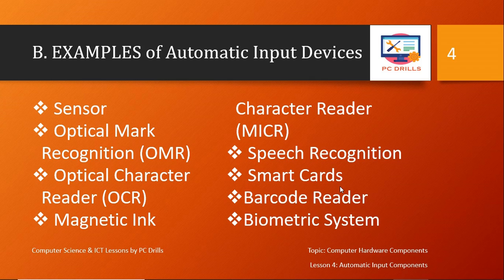The examples we have for automatic input devices or peripherals include: sensor, optical mark recognition (OMR), optical character recognition (OCR), magnetic ink character recognition (MICR), speech recognition, smart card, barcode reader, and biometric systems. OMR, OCR, and MICR might be confusing at first, but with time you'll be able to distinguish them. They work in a similar way but are very different things and should not be confused with one another.